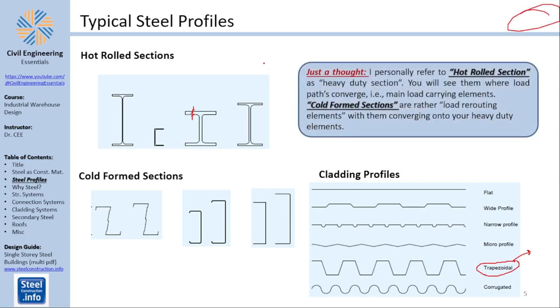One little note I have here is I personally refer to hot rolled sections as heavy duty sections. We'll see those heavy duty sections wherever load paths converge, for example beams and columns and main load carrying elements, whereas cold form sections are rather load rerouting elements with them converging into the heavy duty elements. The cladding panels or the purlins here would be perfectly fine with cold form sections.